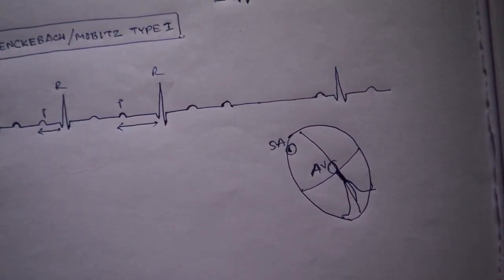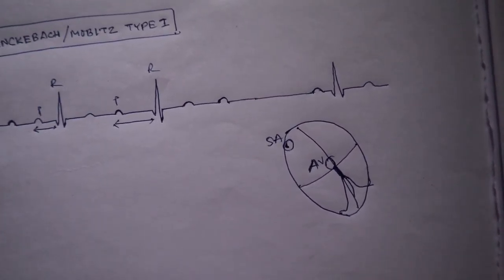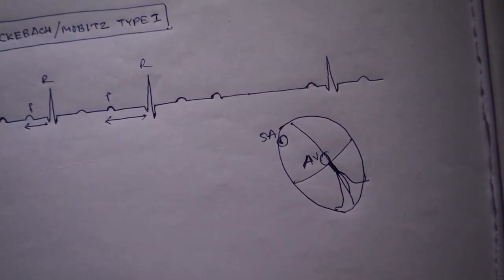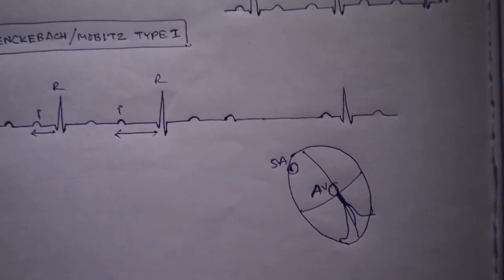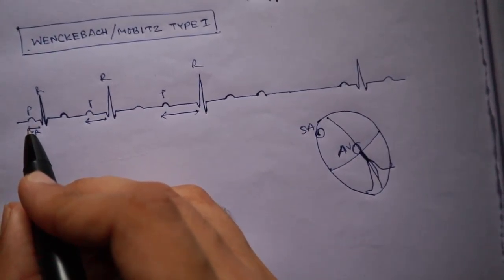So Wenckebach or Mobitz type 1 is a type of second degree AV block. This is a special type of AV block where we can see that the PR interval is gradually increasing.